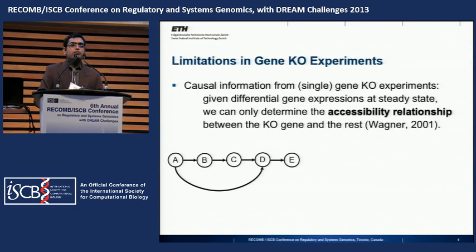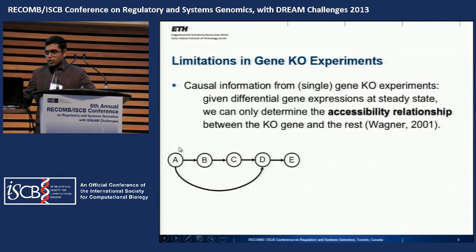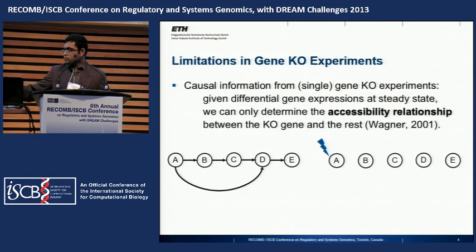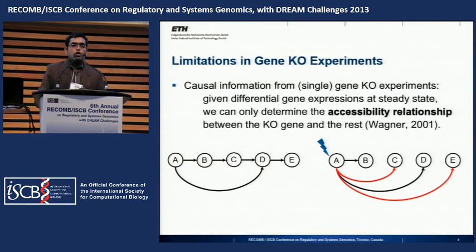We begin by observing the fundamental limitations in what one can infer from differential gene expression data at a steady state in a gene perturbation experiment, such as a knockout experiment. If you have a network and perturb gene A, then all genes regulated by A — whether directly or indirectly — will have differential expression. So it is not possible to differentiate between direct and indirect regulation from steady-state gene expression data.